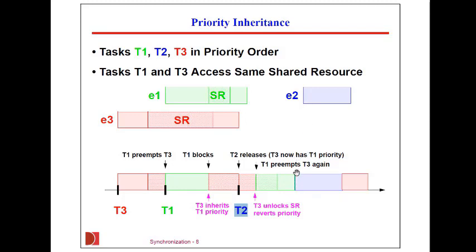Once T-1 gets done, there are two tasks that are ready: task T-3 needs to complete and task T-2 is ready to launch. But T-3 is the lowest priority, so T-2, being higher priority, will be executed and runs to completion, and then finally task three completes.